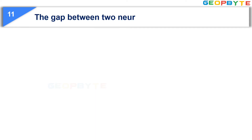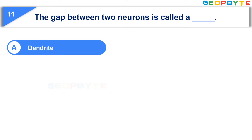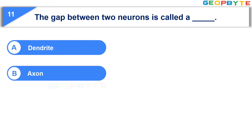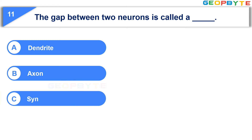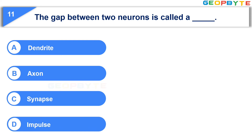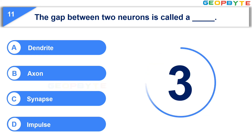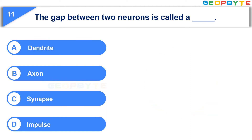The 11th question is: The gap between two neurons is called a dash. Option A: Dendrite. Option B: Axon. Option C: Synapse. Option D: Impulse. Your time starts now. Your time is up and the correct answer is Option C: Synapse.